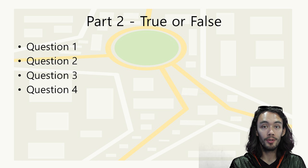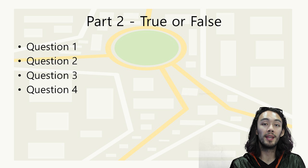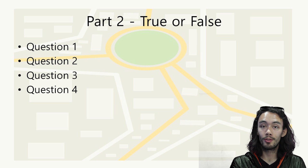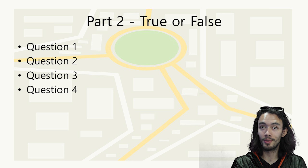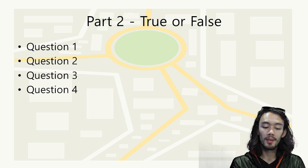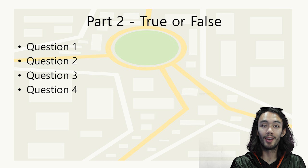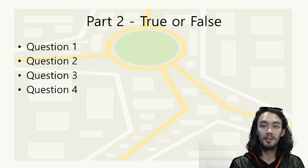Let's move on to part two — keep looking at the map. These are going to be easy true or false. Question one: the movie theater, restaurant, and cafe are in the same block — true or false? Question two: the museum and the bank are in the same block. Question three: the school is across from the library. And question four: the restaurant is between the hospital and the cafe.